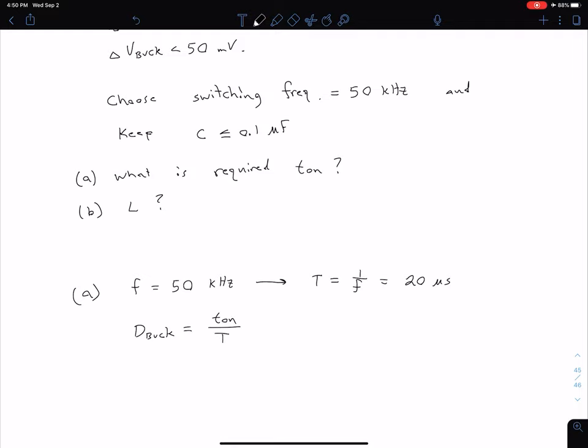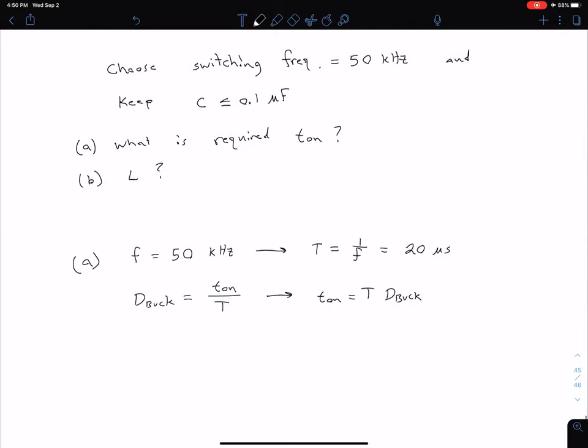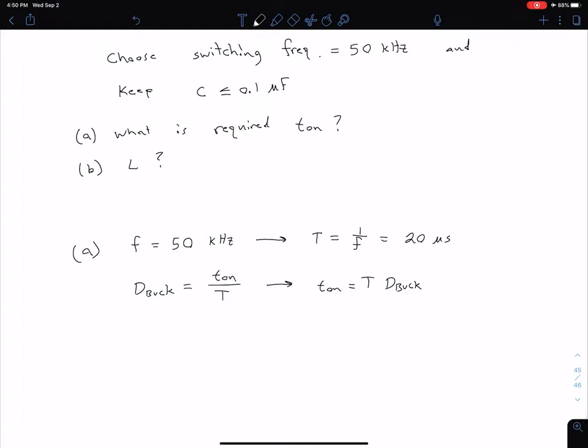Now we know this period, our capital T, and we're trying to find T_on. So let's use our other information to find this duty cycle. Then we can say our T_on is just equal to T times D_buck. So we're trying to find our duty cycle first. Remember, we have another equation for duty cycle that relates our input voltage V_raw and our output voltage. That equation is D_buck equals V_out divided by V_raw.